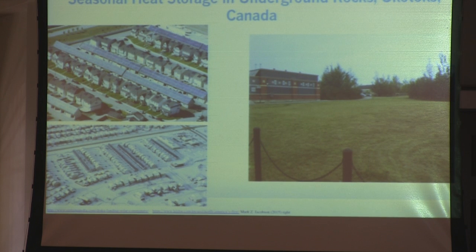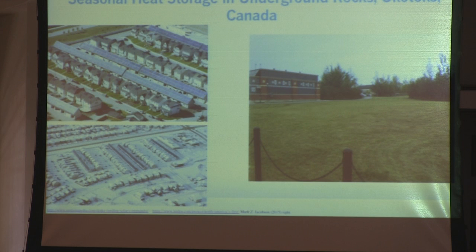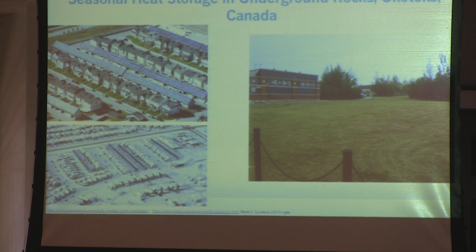Here's another example of seasonal storage. This is a community in Okotoks, Canada, one hour south of Calgary. In the summer, 52 homes with solar collectors on their roofs heat a fluid that transfers heat via pipes to a field excavated and filled with rocks. The heat warms the rocks to 80 degrees Celsius, stored until wintertime. In wintertime, the whole system runs in reverse and that stored heat provides 100% of the heat for those 52 homes even with snow on the ground. This is called seasonal heat storage.